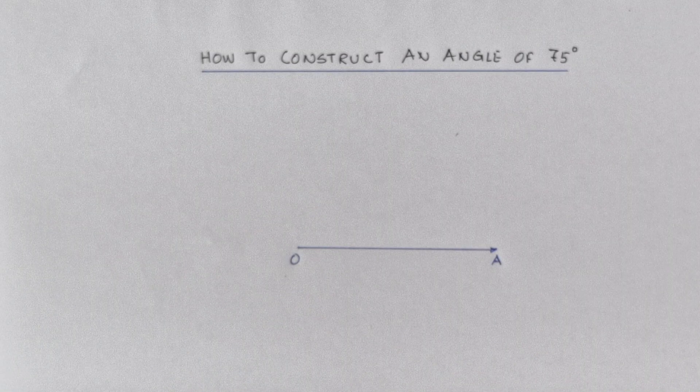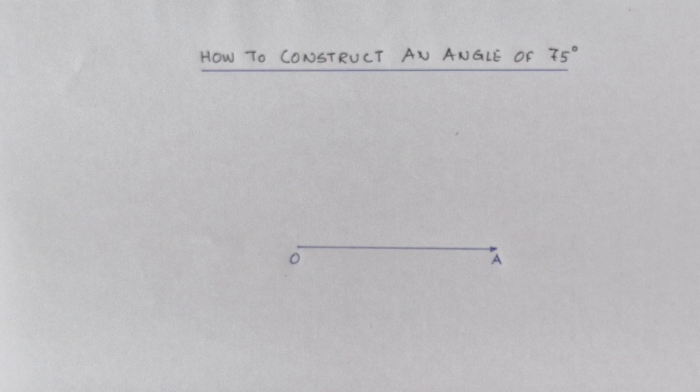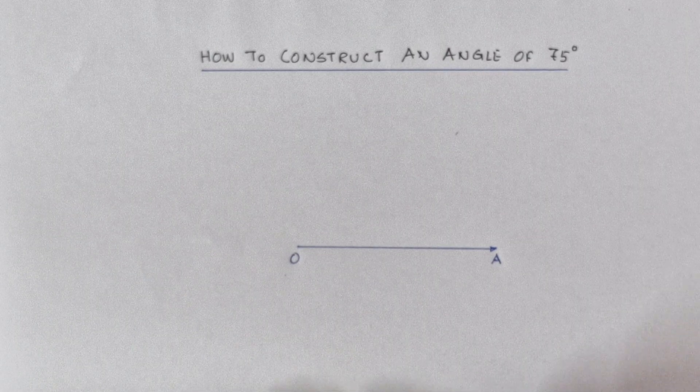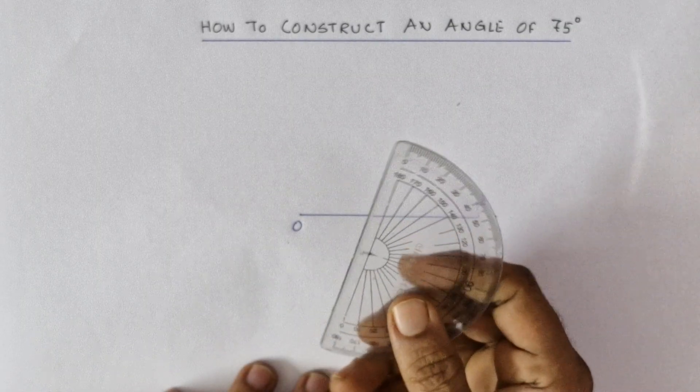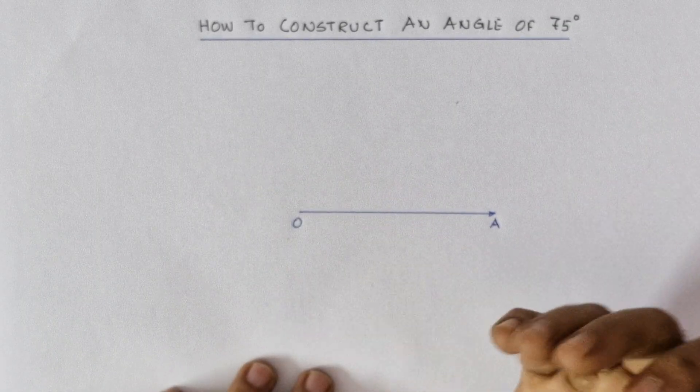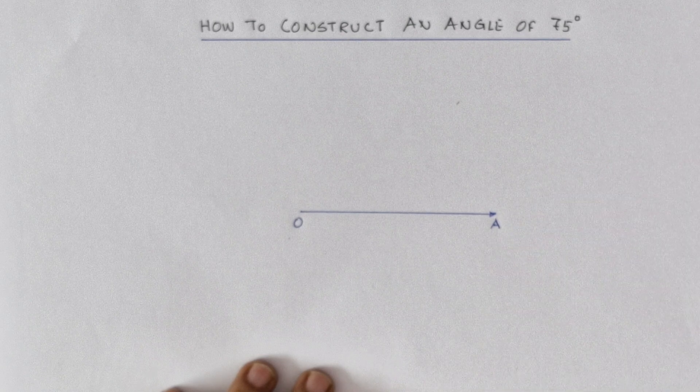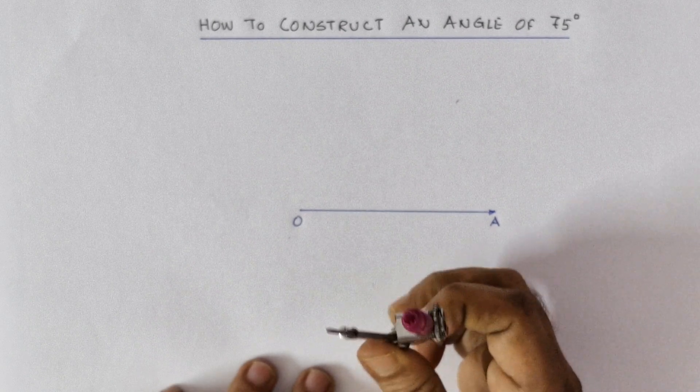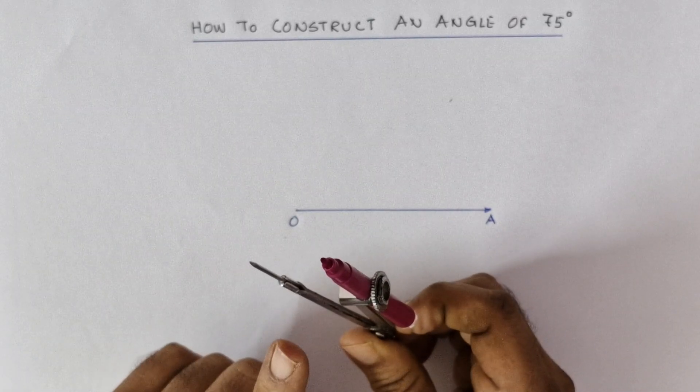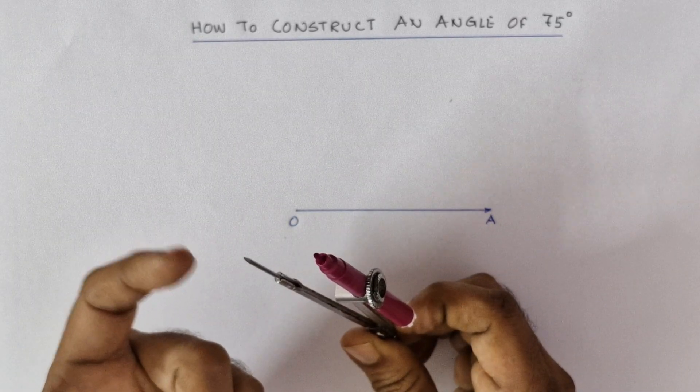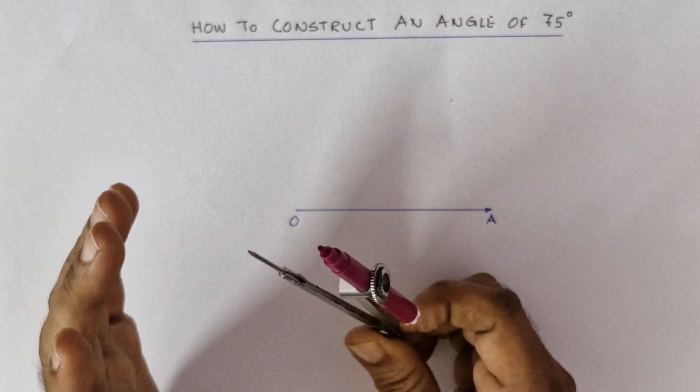You will learn how to construct an angle of 75 degrees in the fastest way. In order to construct an angle you need a few instruments: a ruler, a protractor to check whether you've constructed the angle in correct measurement, a compass, and a pencil. I'm using a sketch pen instead of a pencil so you get better visibility of the constructed angle.